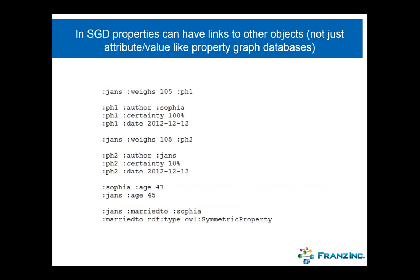In this first example, I'm going to show that our properties can have properties themselves. Unlike property graph databases, we can actually point to other objects. In a regular property graph, a property can have key-value pairs, but the values can't be objects themselves. In a triple store and semantic graph database, they can. For example, we have the statement that Jans — that's me — weighs 105 kilos. The fourth element would be property handle number one, and the author would be Sophia, my wife.